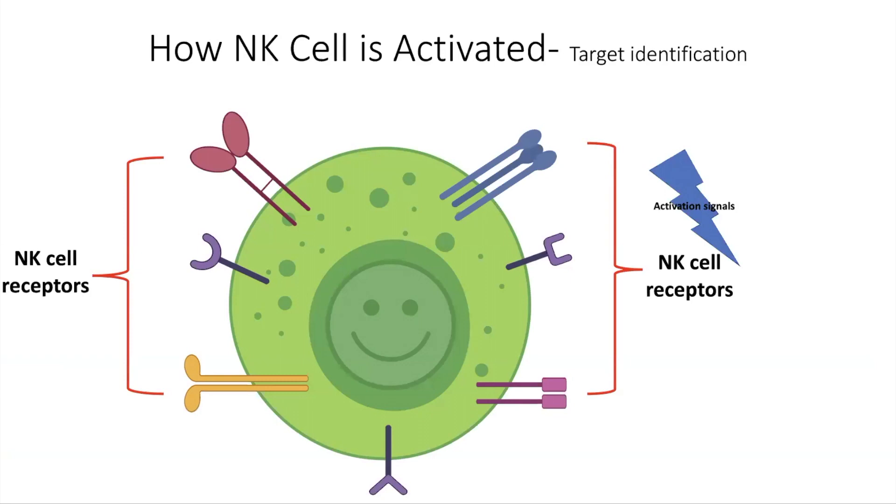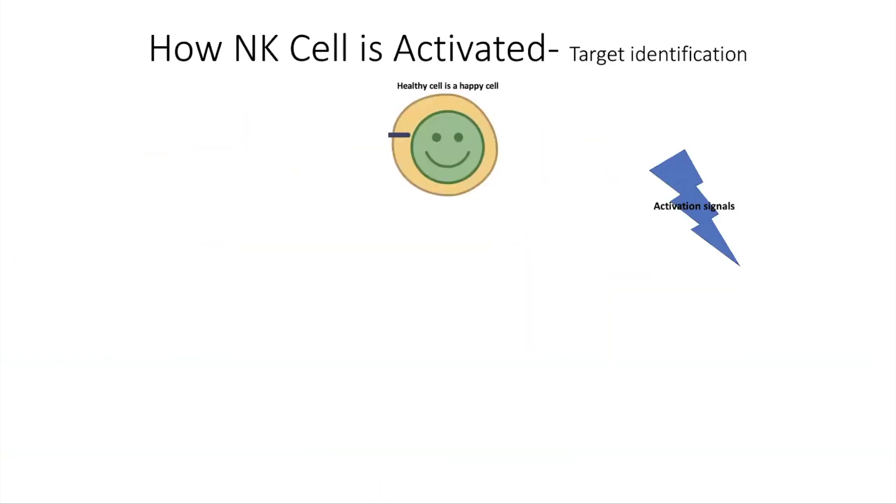To make it simple, I would say usually healthy cells in our body are happy. So they send a happy signal or don't kill signal that is received by specific receptors on the NK-cell that prevent killing of the happy cell.